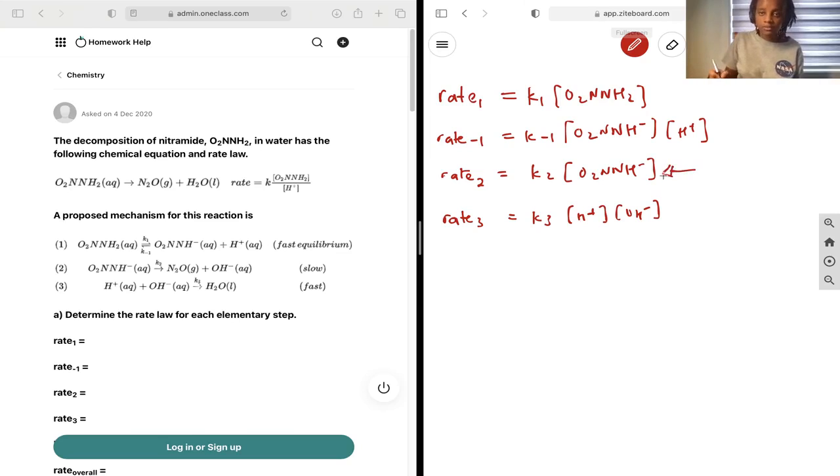The reason why is because the reaction can only move as fast as its slowest mechanism, because you can't have the third mechanism until the second one is complete.